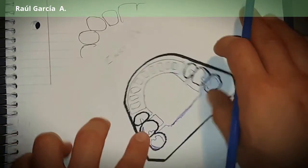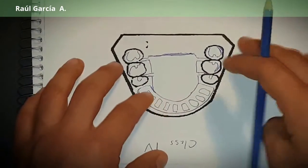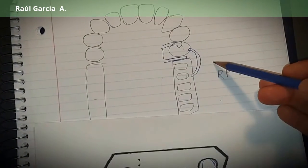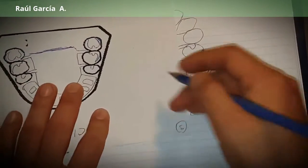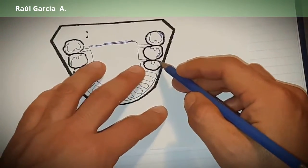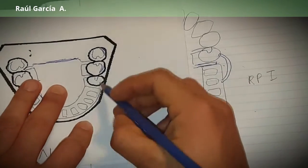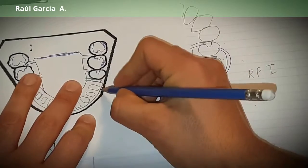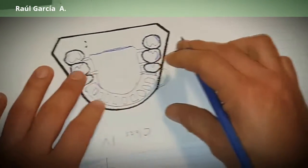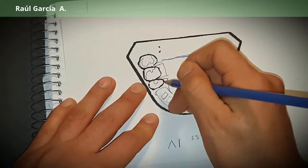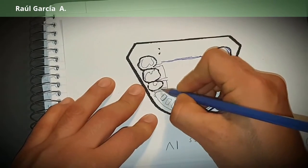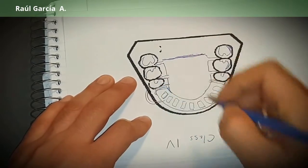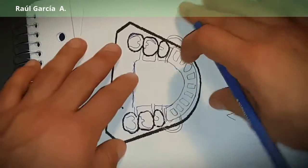Here again we do the same principle. We see that we have two saddle areas here. We want to replicate it here. So mesial rest, guide plate, that's a guiding plane, I-bar. Same here. Guide plate is guiding plane, I-bar. We already put the mesial rest. We turn it around.